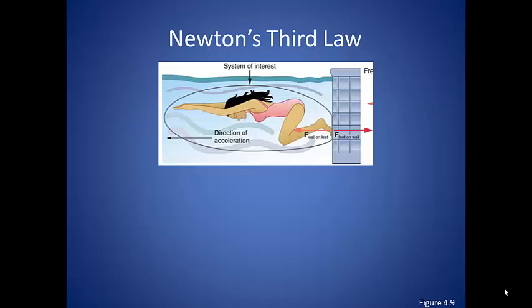Take the swimmer in figure 4.9 of your textbook. She is exerting a force on the wall of the pool with her feet. Because she then accelerates in the opposite direction, there must be a force pushing her in the opposite direction.